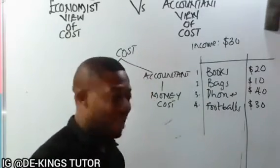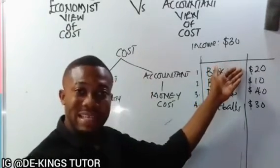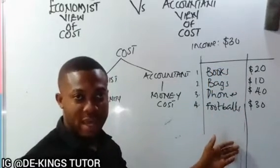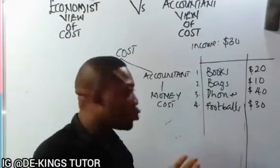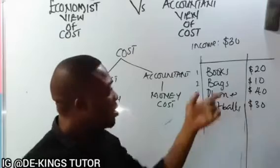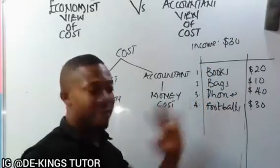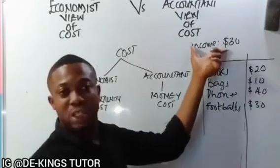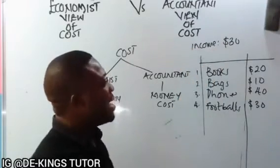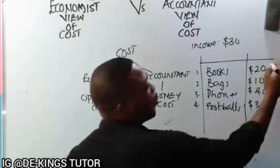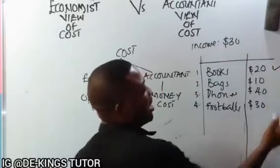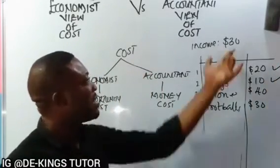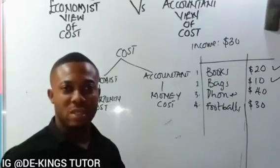The scale of preference lists what the individual wants in order of importance: books, bags, phone, and football. Since the disposable income is $30, we have to satisfy books first ($20) and then bags ($10), and with that the income is exhausted.